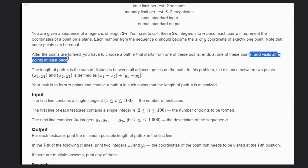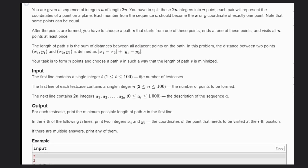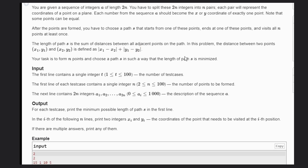You have to visit all points at once. The length of the path is the sum of distances between all adjacent points on the path. In this problem, the distance between two points is calculated as |x1 - x2| + |y1 - y2|. Our task is to minimize this path.